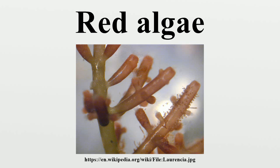The trichogyne will continue to grow until it encounters a spermatium. Once it has been fertilized, the cell wall at its base progressively thickens, separating it from the rest of the carpogonium at its base.